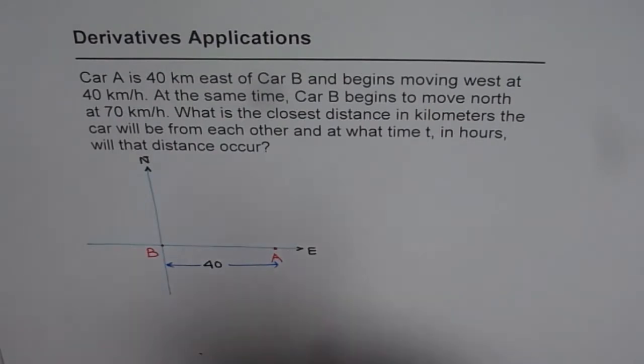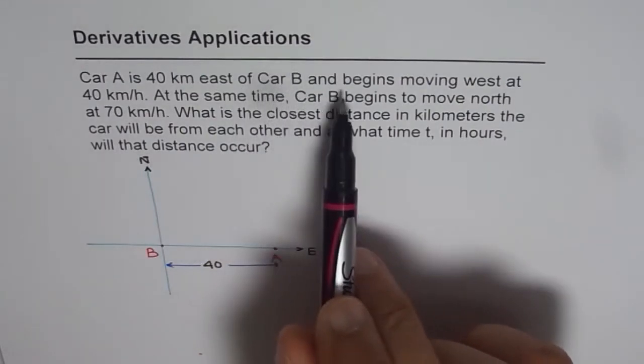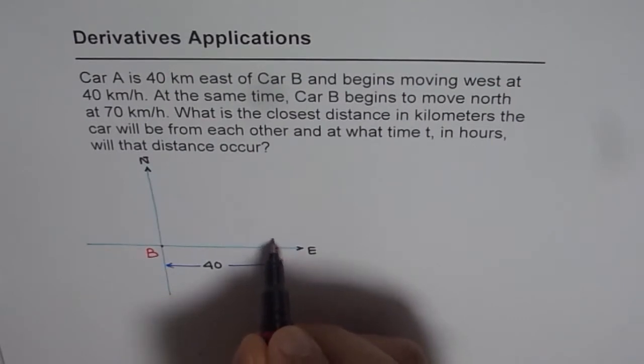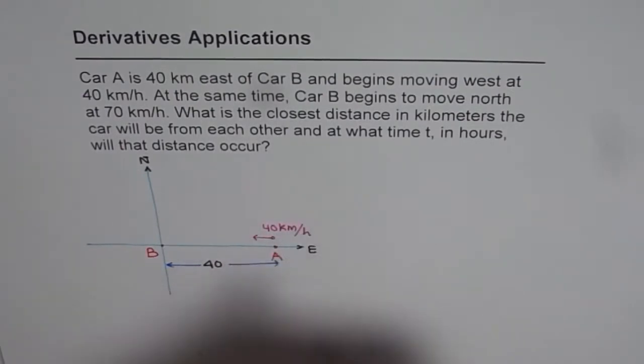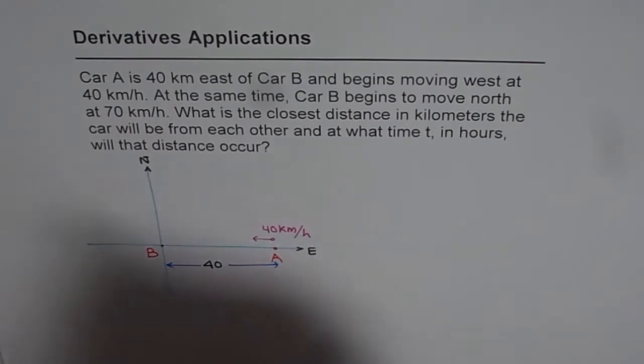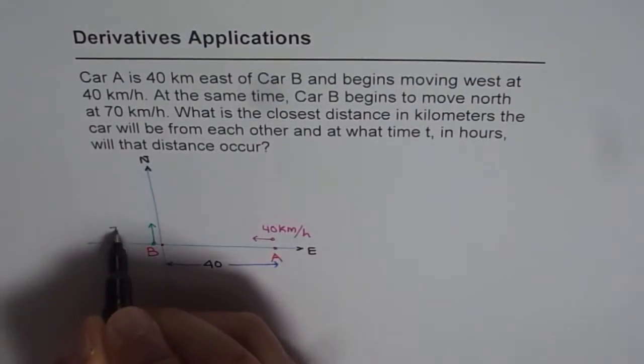Now it says car A is 40 kilometers east of car B and begins moving west at 40 kilometers per hour. So it starts to move west. And the speed is 40 kilometers per hour. At the same time, car B begins to move north at 70 kilometers per hour.